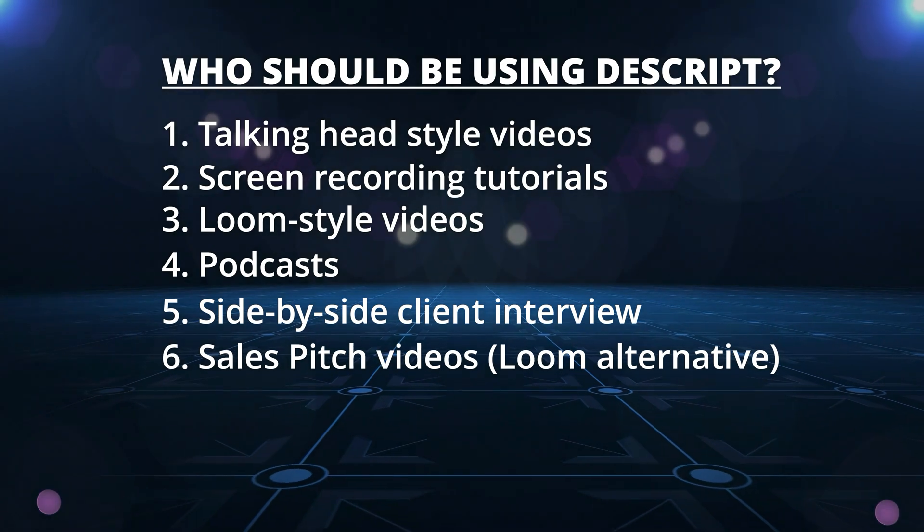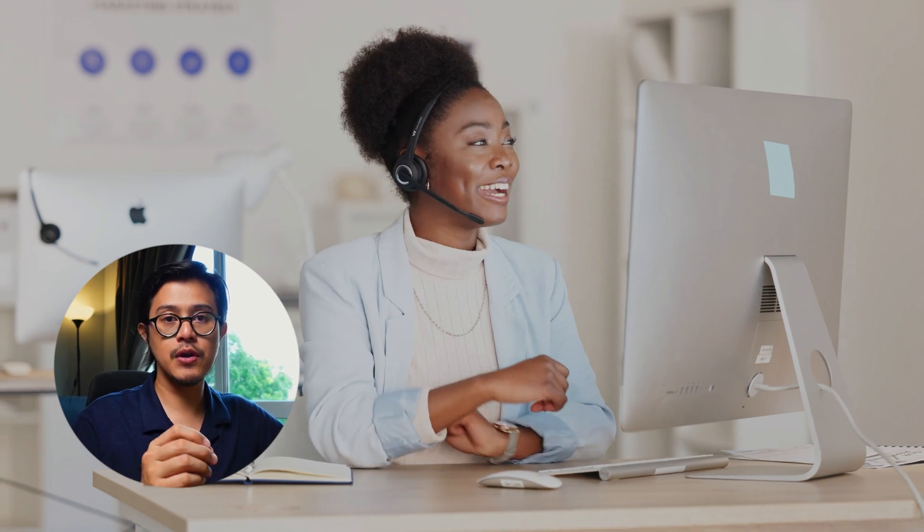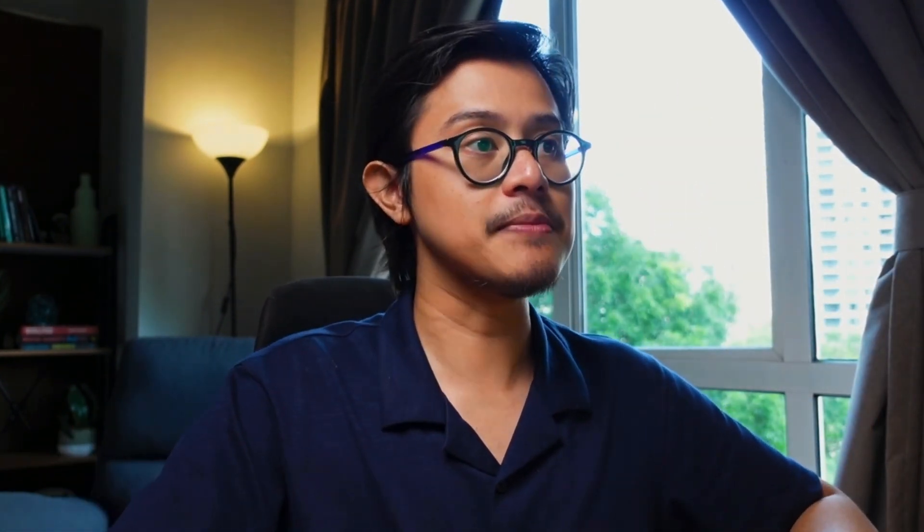A lot of sales pitches use Loom typically — when you pitch a client, you send a Loom link. An alternative is Descript; it's almost the same thing. So instead of paying for two or three softwares, you only pay for one, which is Descript. It's about $12 a month — really cheap.